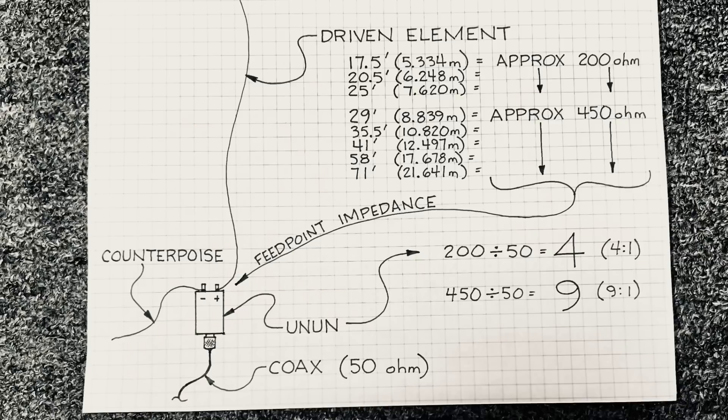It's just somewhere in that neighborhood, maybe 180 to 300, but that approximate neighborhood. Then for longer lengths, which I've built a lot too, like for mostly vertical, is 29-foot, 35-and-a-half-foot, 41-foot, and I've built some 58-and-71-footers, but those are horizontal-type antennas. But feed point impedance in those are around 450. Yeah, maybe 375 to 550, but approximately 450 ohms.